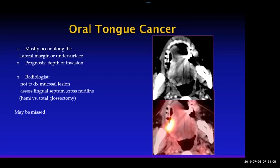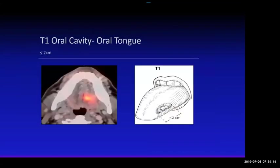The important thing is to make sure you're looking for the factors that make the tumor a higher stage. This is just a tiny tumor, less than 2 cm, on the lateral margin of the tongue — the classic location. On PET you can see it's taking up glucose. This is a small oral tongue lesion, T1.